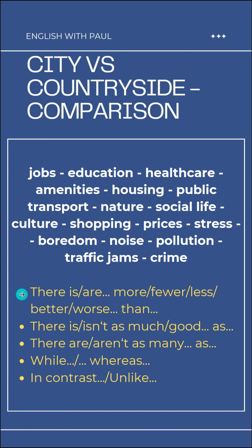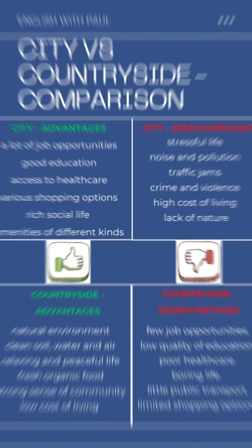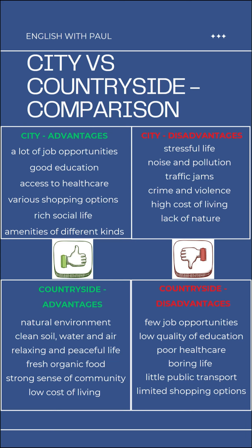Also use some of these words and phrases when you make sentences comparing the city and the countryside. For example: There are more job opportunities in the city than in the countryside. There is less noise and pollution in the rural areas than in the urban areas. There aren't as many schools and hospitals in the countryside as in the city. Life in the city is faster and more stressful, whereas rural life is slower and more relaxing. In contrast to rural areas, the public transport in the city is usually well developed.